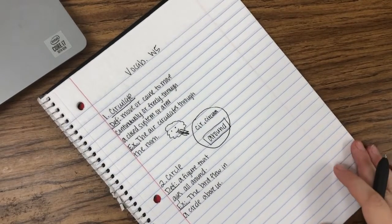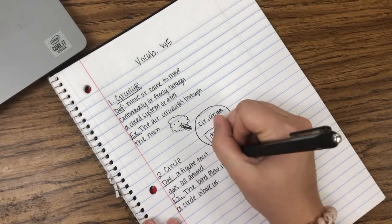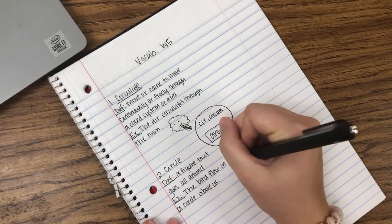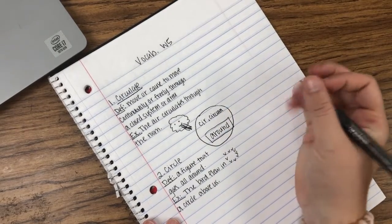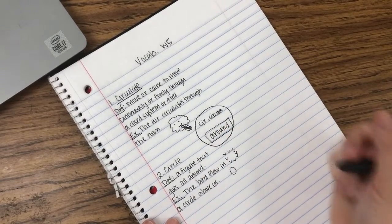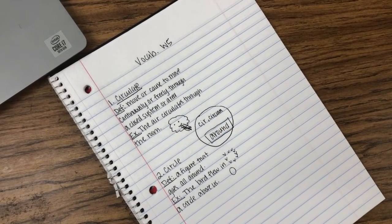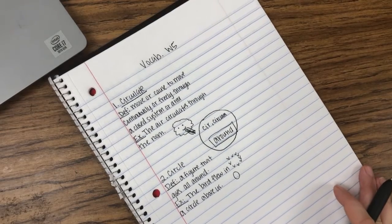And then the picture we're going to draw for that, you can either draw birds flying in a circle or you can just draw a circle to help you remember the bird flew in a circle above us.